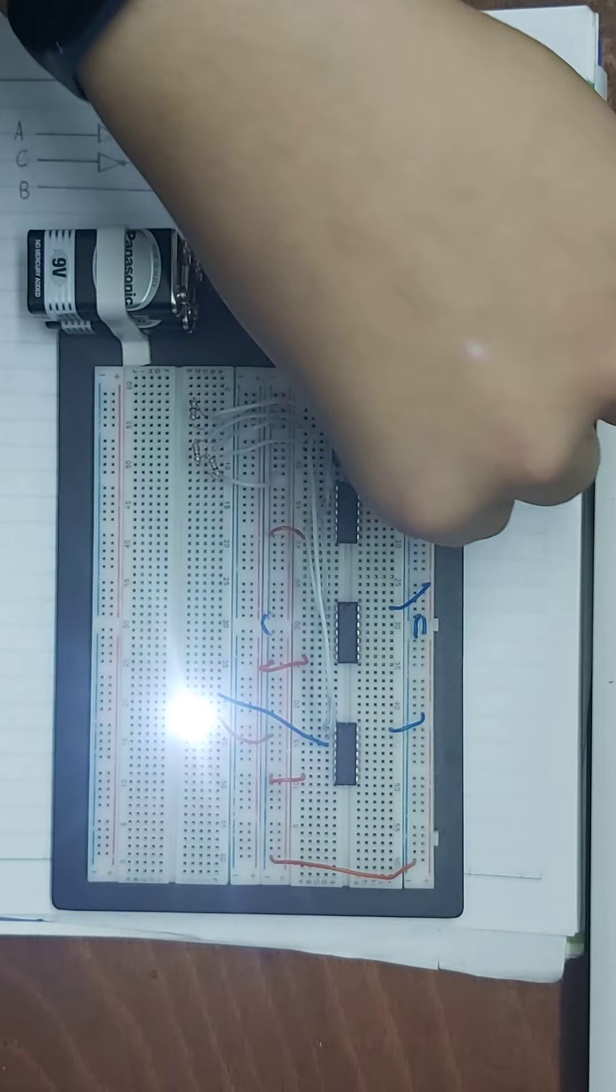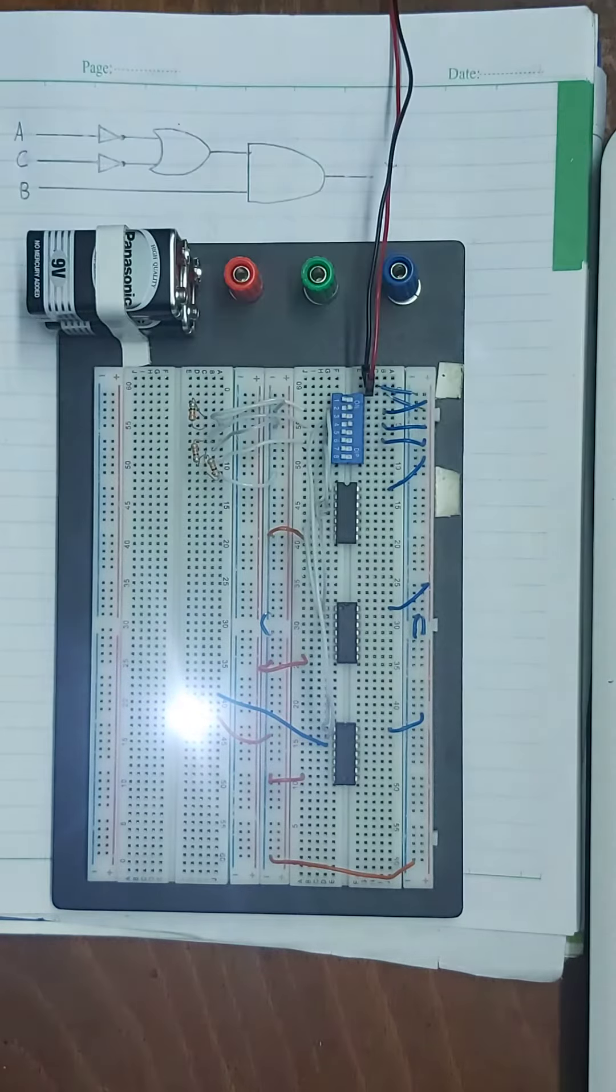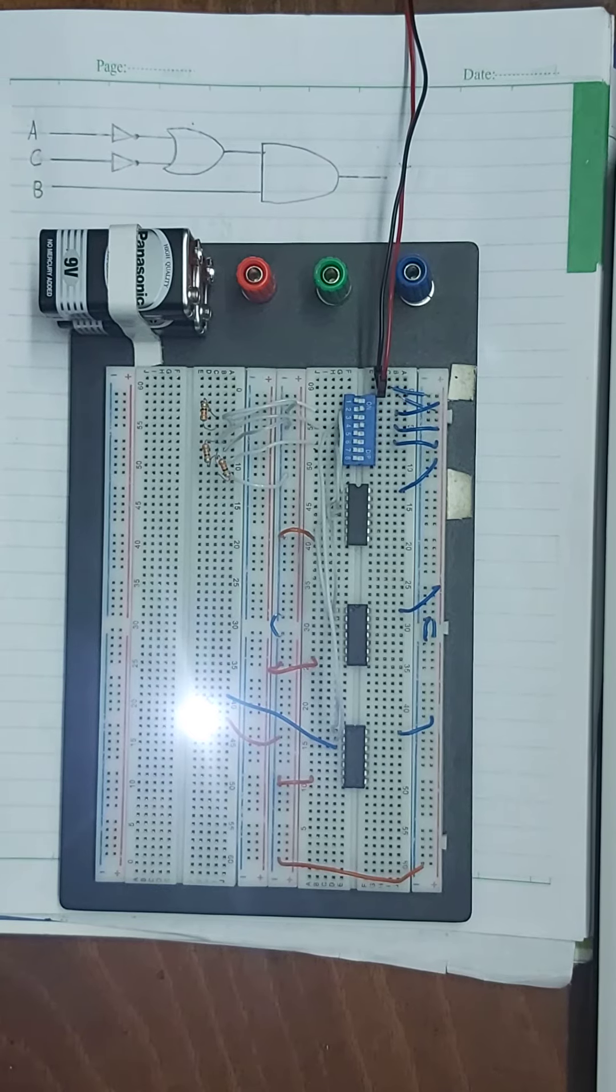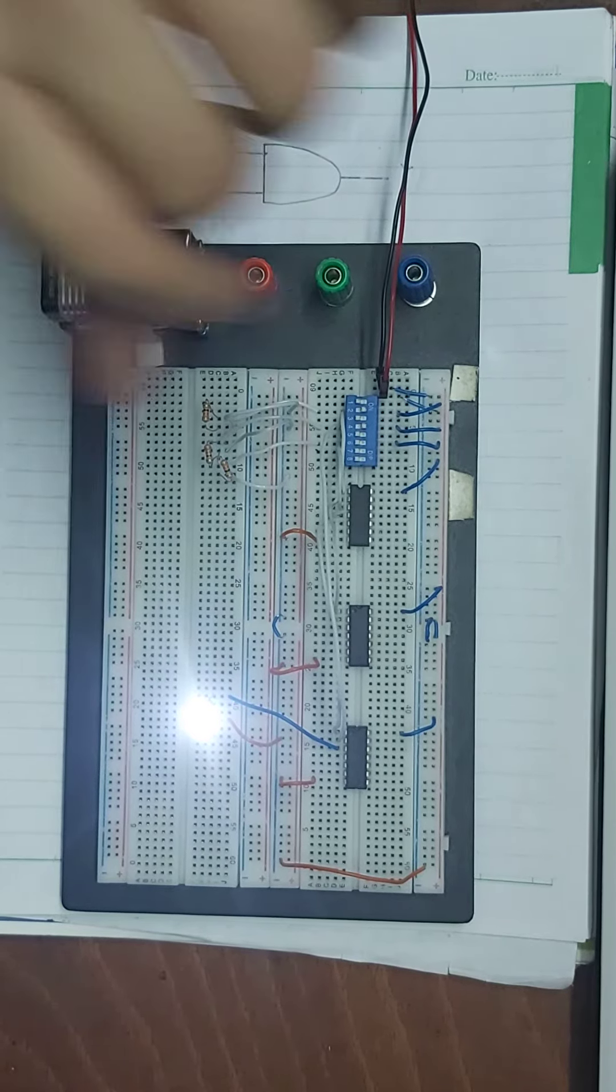There was a problem. The only order, well not the only one, but one of the orders that should make the lamp turn off is 111. So let's write it. Okay, now it's all off.